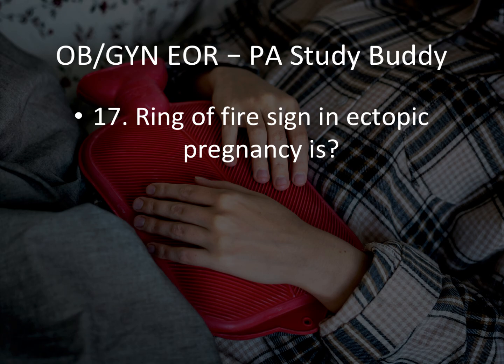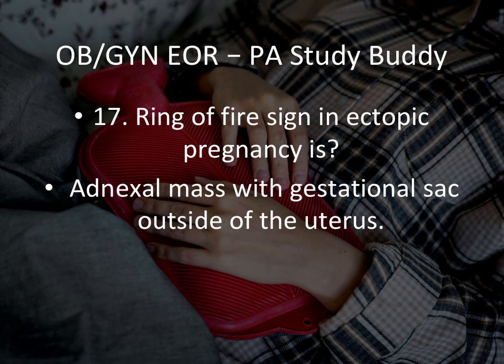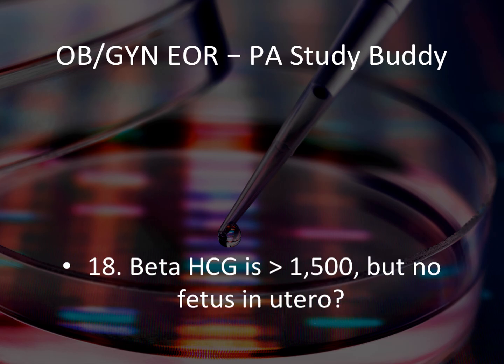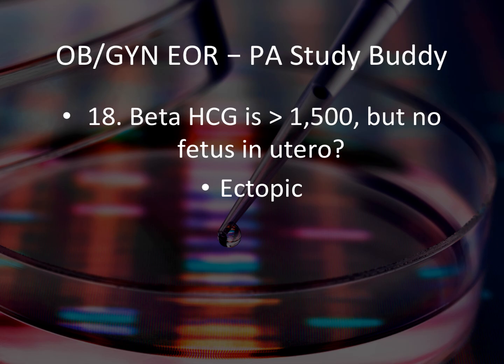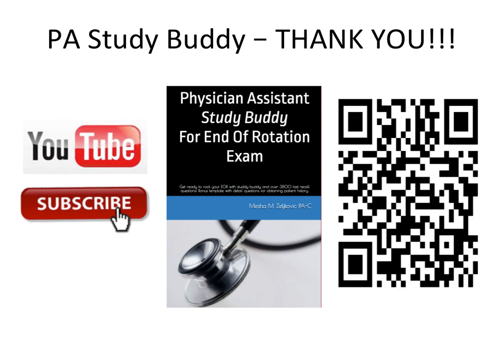Question 17: The ring of fire sign in an ectopic pregnancy is what? The ring of fire sign is an ectopic mass with gestational sac outside of the uterus. Question 18: Beta-hCG greater than 1500 but no fetus in the uterus — this should make you think of ectopic pregnancy. You find a beta-hCG greater than 1500 but on ultrasound there's no fetus in the uterus — that is ectopic pregnancy.